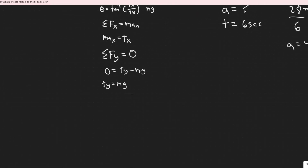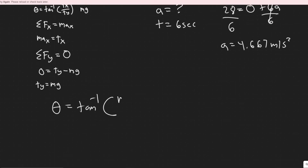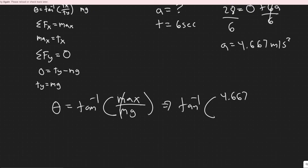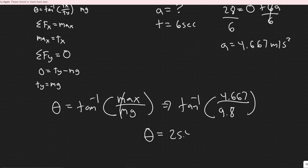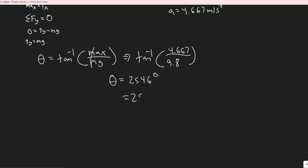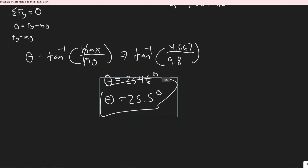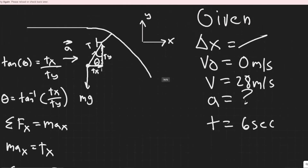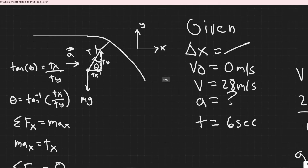Now we have everything we need. Theta equals the arctangent of t sub x over t sub y, which is m·ax over m·g. Notice the mass cancels, so theta = arctan(ax / g) = arctan(4.667 / 9.8). Plugging in using the exact value gives theta = 25.46 degrees, or roughly 25.5 degrees. That's the angle the string makes as the object swings backward during acceleration.